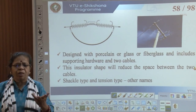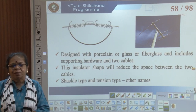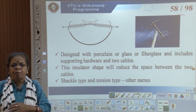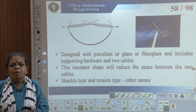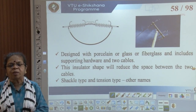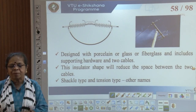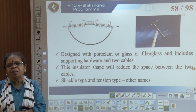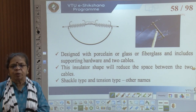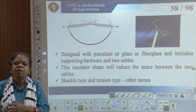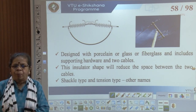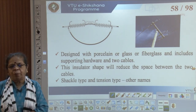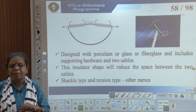Strain insulators are designed with porcelain, glass or fibreglass and include supporting hardware and cables. The insulator shape reduces the space between the two cables. Other names for this type are shackle type and tension type — all meaning the same thing, used whenever there is a lot of tension in the line.